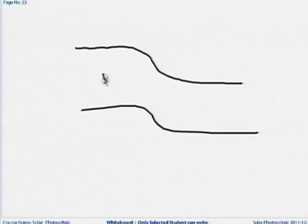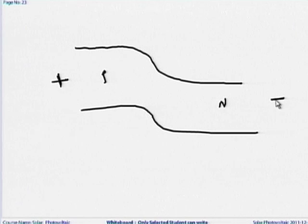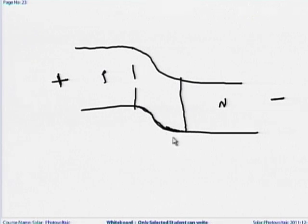It will be clear if you draw the energy band diagram. This is the p-side, this is the n-side. When light falls, this terminal gets positive and this terminal gets negative — that is the external potential generated. Now, what about the electric field? Electric field occurs whenever the bands are not flat. Whenever you draw the band diagram and the band is not flat, it indicates an electric field. Higher the slope of the band, higher the electric field. So between these two regions there will be an electric field.